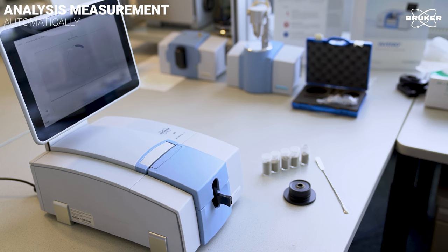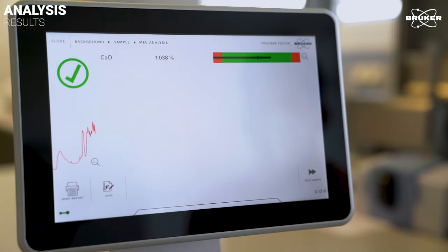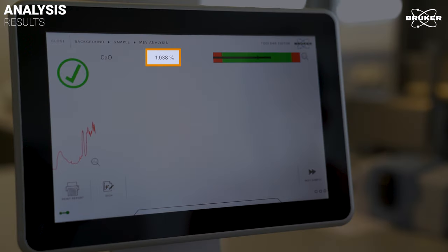After a few seconds, we get the result and a green checkmark indicates that calcium oxide was found. And because calcium oxide is present, the software has automatically started a quantification and the percentage of calcium oxide contained in the sample is displayed at the top of the screen – 1.038%.